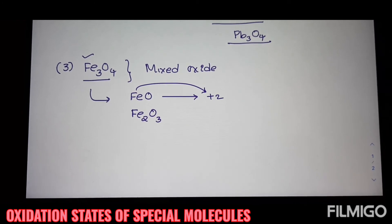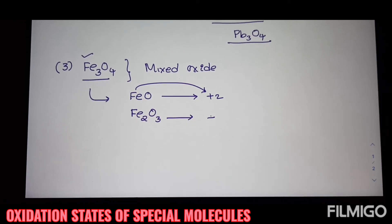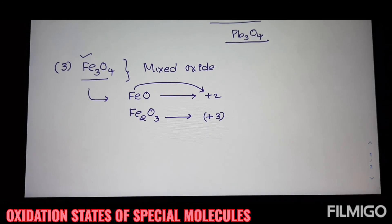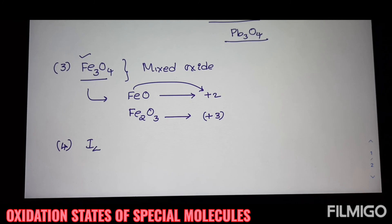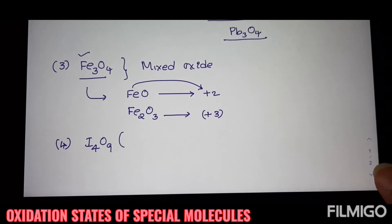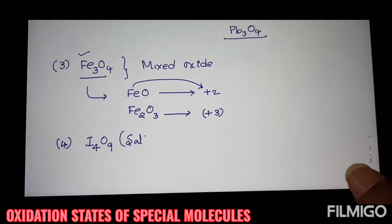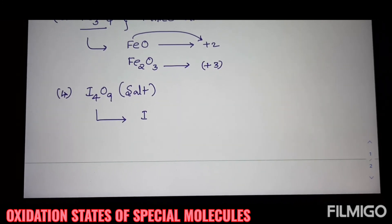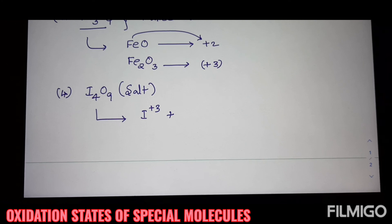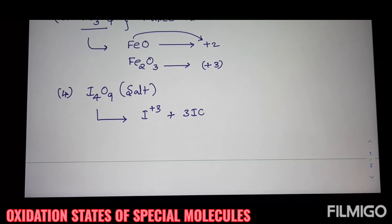FeO has plus 2 oxidation state. And I4O9, it is a salt. It is a combination of I plus 3 and 3 moles of IO3 minus.